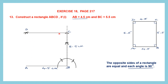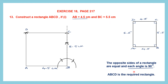Now we can join CD and AD. So here we have joined CD and now let's join AD. Now we have a rectangle ABCD. So this is how we construct a rectangle when two adjacent sides are given. ABCD is the required rectangle.